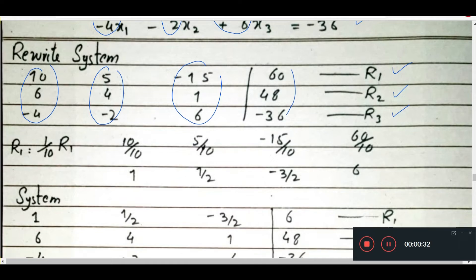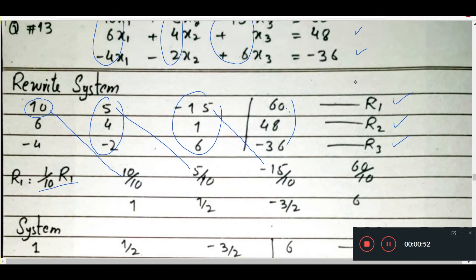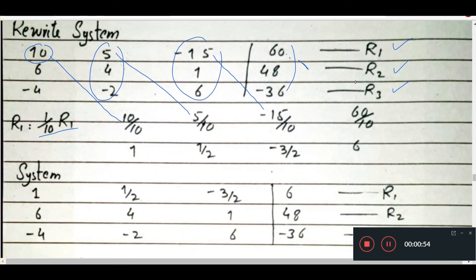Next, what is the first entry? That is called the pivot. We will write 1. How can we make this 1? By dividing by 10 — so R1 divided by 10. So: 10 by 10, 5 by 10, 15 by 10, and 60 by 10, which gives us 1, one-half, negative three-halves, and 6. So our new R1 is established.